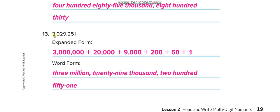Similarly, for the next one with three periods — first millions, then thousands, then ones: three million, twenty-nine thousand, two hundred fifty-one. That is three million, twenty-nine thousand, two hundred fifty and one. Let's move to the next page.